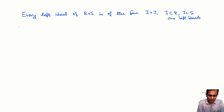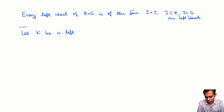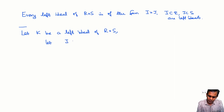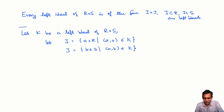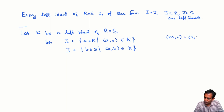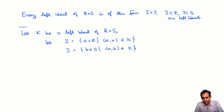How do we prove this? Starting with a left ideal K in R×S, we will try to identify what I and J would be. Let I be the set of all A in R such that (A, 0) belongs to K, and let J be the set of all B in S such that (0, B) belongs to K. It is not hard to see that I and J are left ideals of R and S respectively, because if you take any element R of R and look at R·A, then (RA, 0) will also be in K.